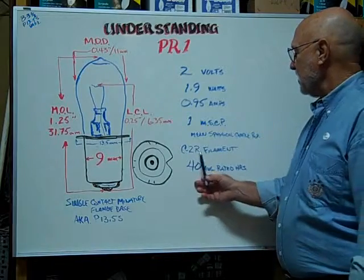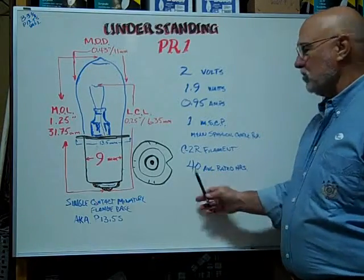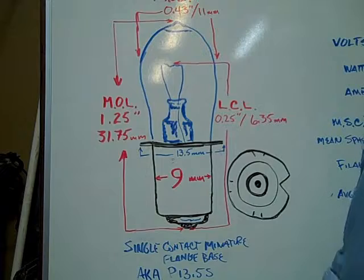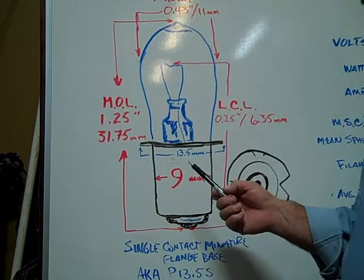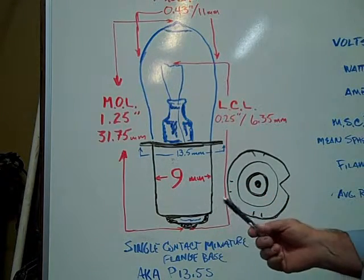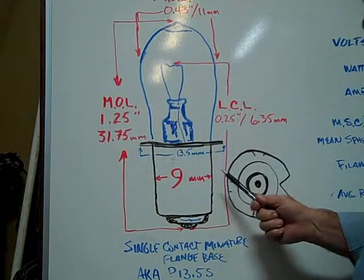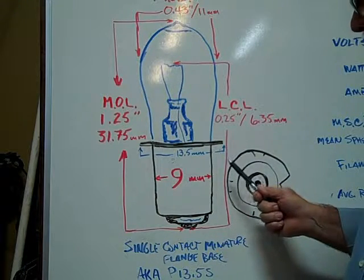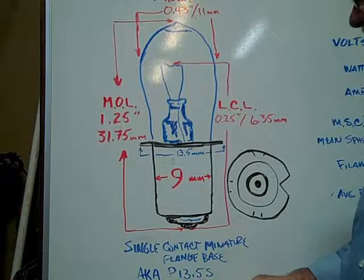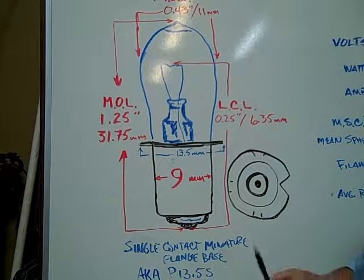The filament type is a C-2R, the average rated hours are 40 hours. The B3.5 single contact miniature flange base bulb is also known as a P13.5S base.